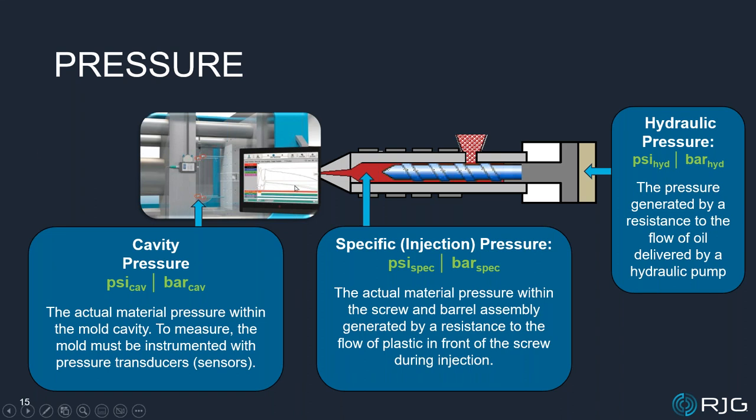The Co-Pilot system traces cavity pressure curves live as they happen and compares them to a template. You can set alarm values around things like peak pressure, cooling rate, or pack rate. If a shot varies from what you know is good, the system sends a 10-volt signal to reject that part — to a part flipper, reversing conveyor, robot, or simply a light tree with red and green indicators for bad and good parts.